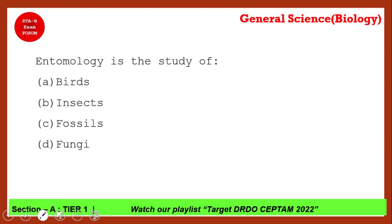The very first question: entomology is the study of which of the following? You have four options. The correct answer is insects — entomology is the study of insects. The study of birds is called ornithology.